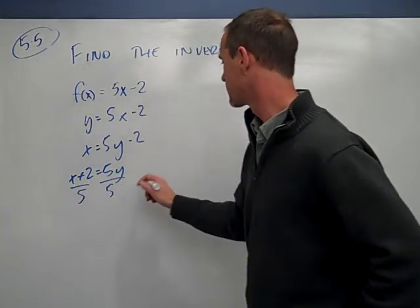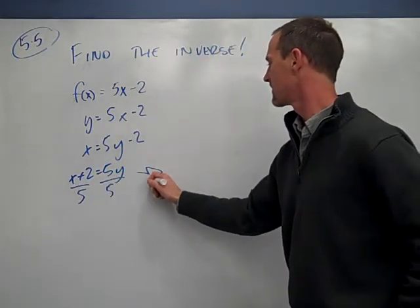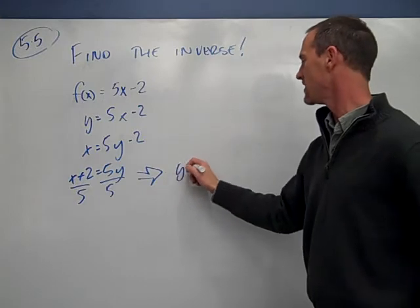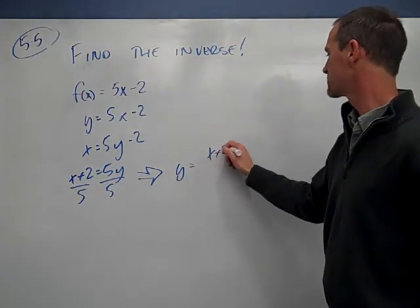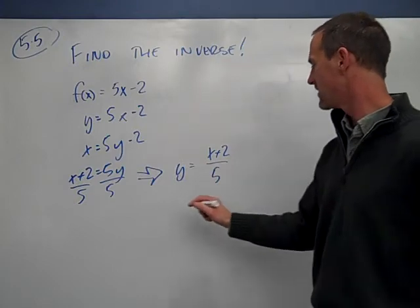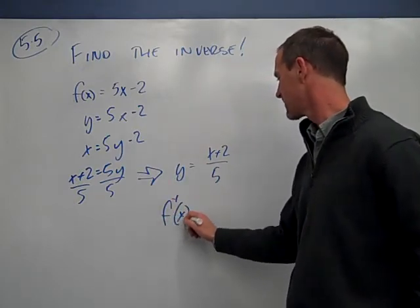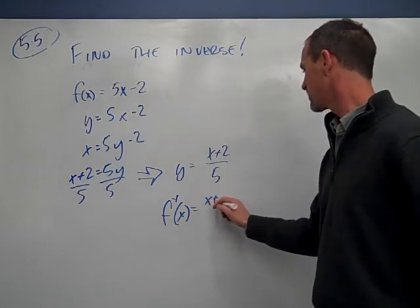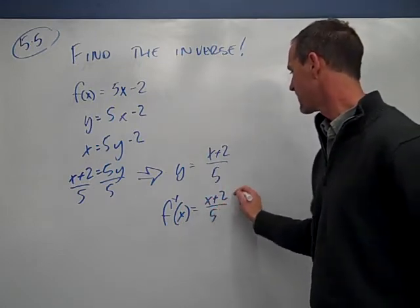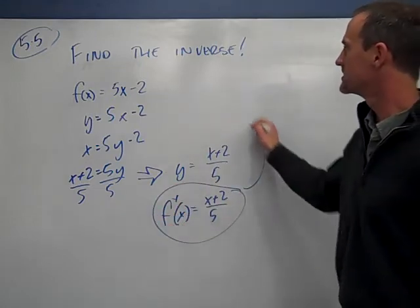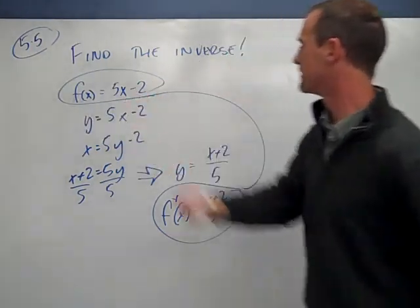And then I'm going to write this as y equals x plus 2 over 5, and then finally I'll write f to the minus 1 of x equals x plus 2 over 5. So, this then is the inverse of our original function.